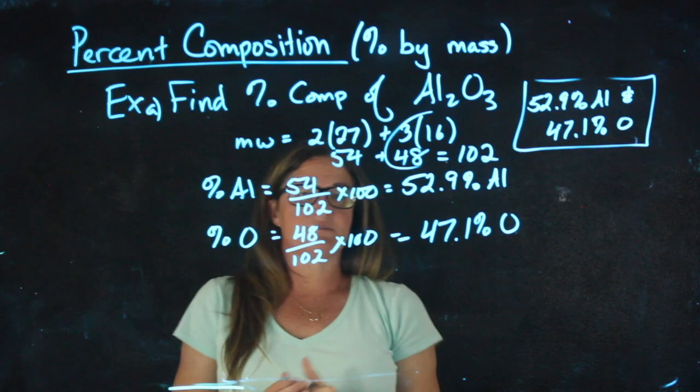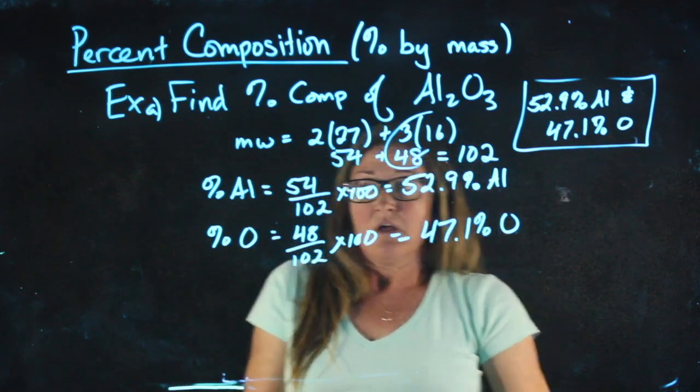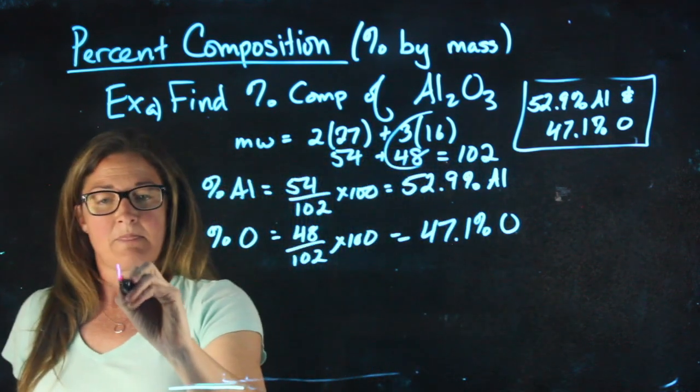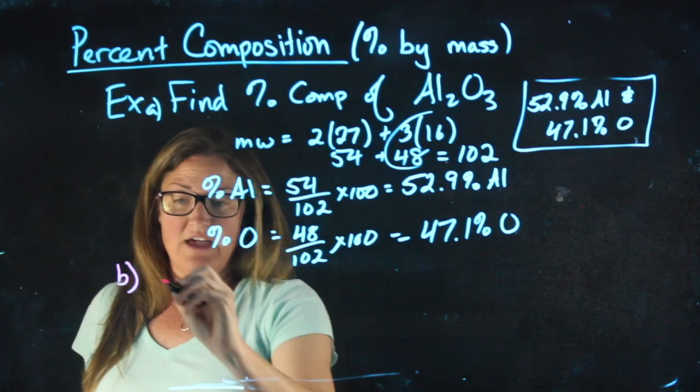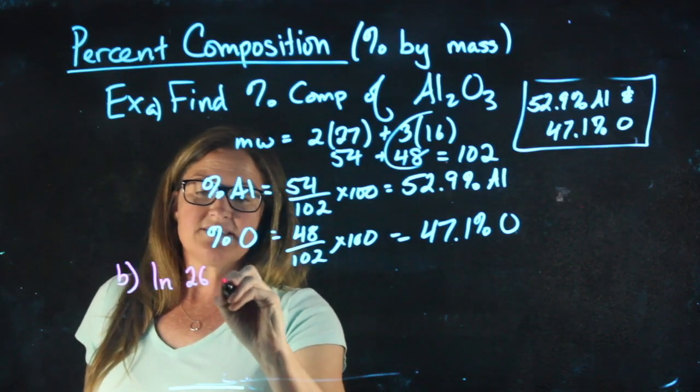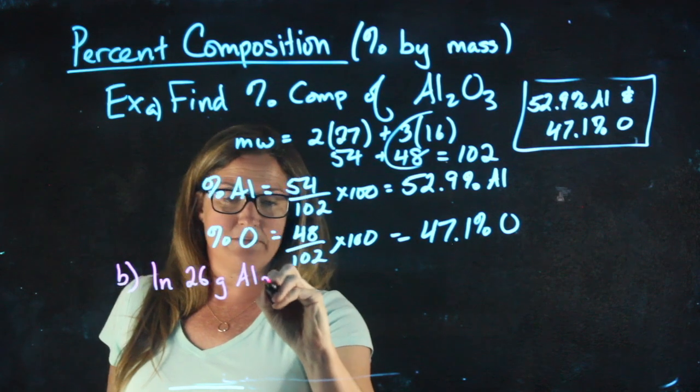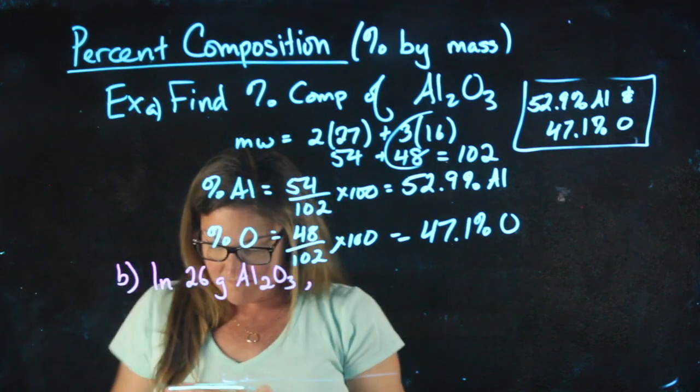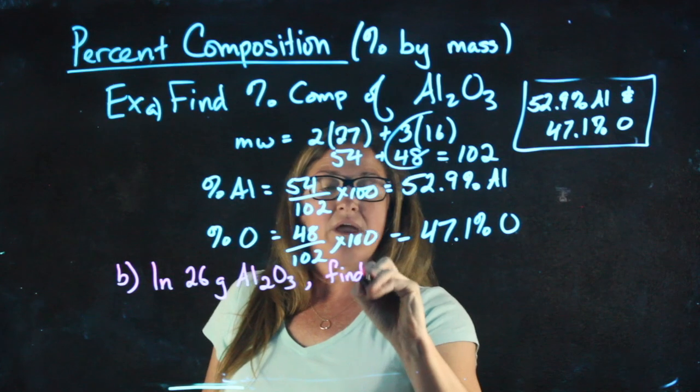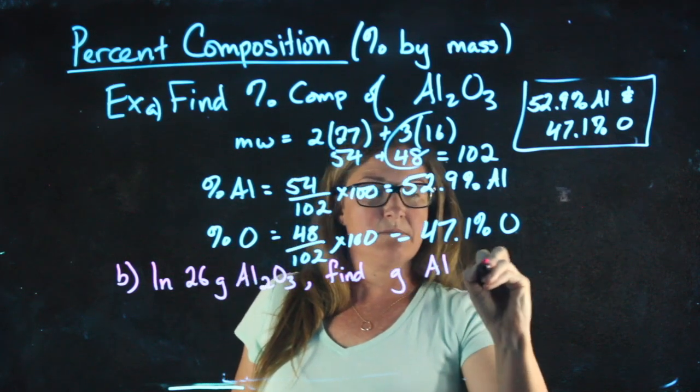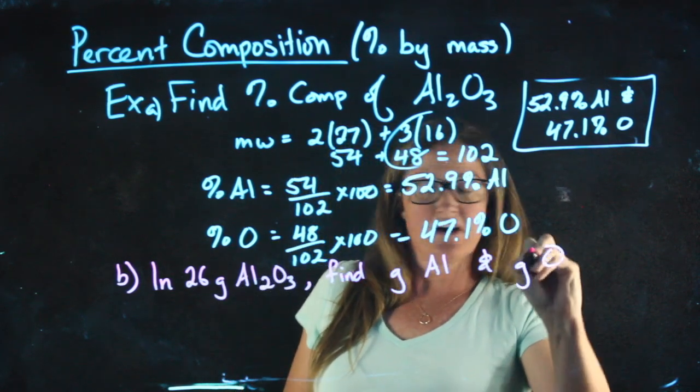How can we use percent composition to do something else? Well, for example, I could ask you this. In 26 grams of Al2O3, we could find the grams of aluminum and the grams of oxygen.